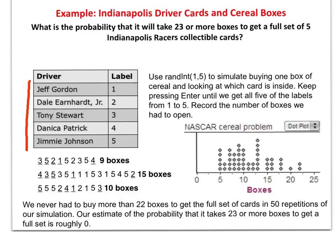We're going to use the random integer feature of our calculator to simulate buying one box of cereal and looking at which card is inside. If I see the number one, there was a Jeff Gordon card. If I see the number three, there's a Tony Stewart card, et cetera. And I'm going to do this until I get one of every card. I'm going to count how many boxes of cereal it took to get them. So if you look at the first time I did this, you notice the first four boxes, I got the numbers three, five, two, and one. However, the fifth one was five, which I already had. Then I got two, which I already had that, three, and then five. And then finally I got the four. So in this case, it took me nine boxes to get one of each of the five cards.